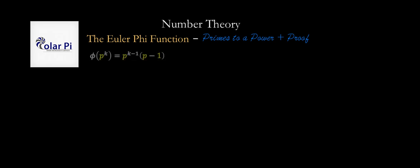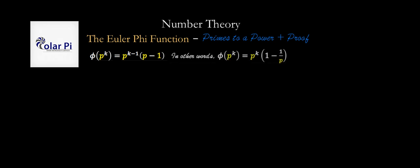is equal to p minus 1. Here in this video we're going to show that if p is a prime, then phi of p to the k is equal to p to the k minus 1 times p minus 1. There's a slightly different writing of this formula that is a bit more useful in some places, and of course both right-hand sides are equal.